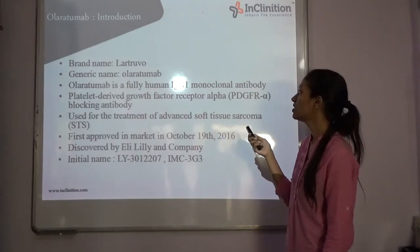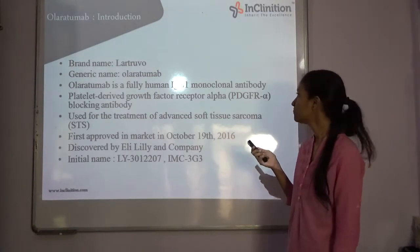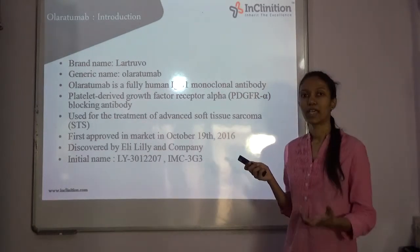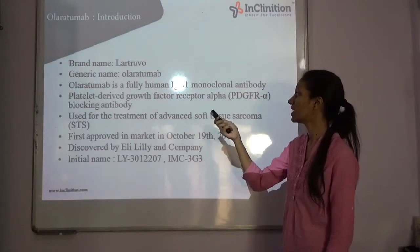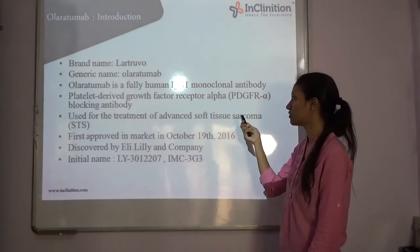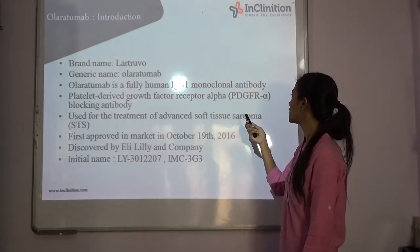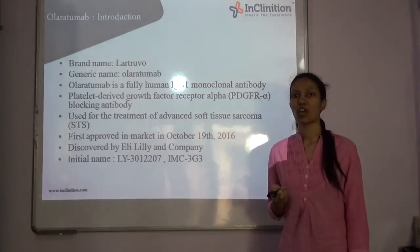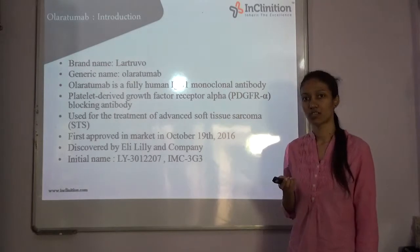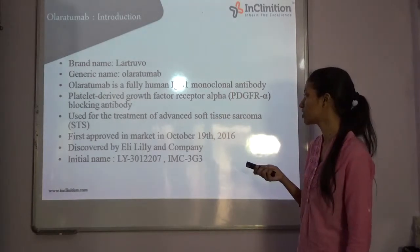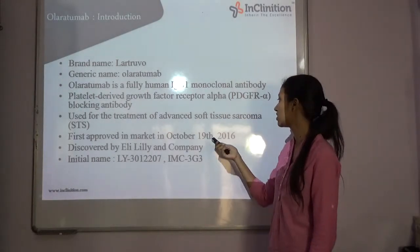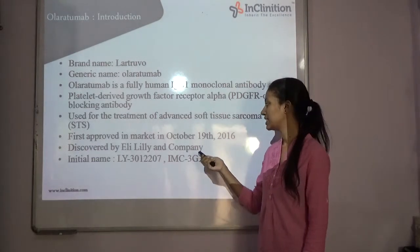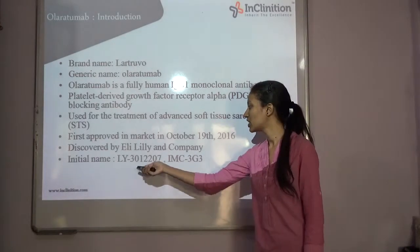It is a fully human immunoglobulin G1 monoclonal antibody. Its basic mechanism is it blocks platelet-derived growth factor receptor alpha, that is PDGFR-alpha, and it is used in the treatment of soft tissue sarcoma. It was first approved in October 2016 and it was discovered by the company Eli Lilly.